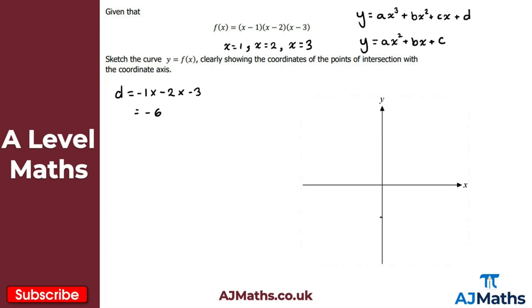The curve cuts through minus 6 on the y-axis — that's our y-intercept. We know the three solutions are x equals 1, x equals 2, and x equals 3. Now we're only sketching this so it doesn't have to be absolutely perfect, but the main idea is that we show where it cuts through the coordinate axes — where it cuts on the y-axis and where it cuts on the x-axis, given by the three solutions.